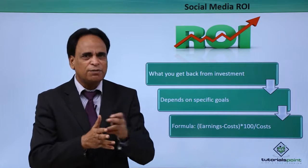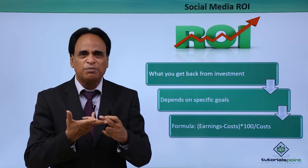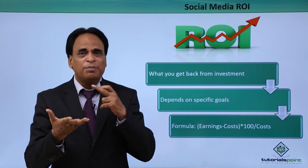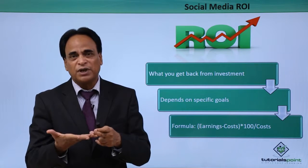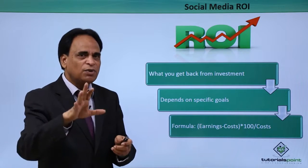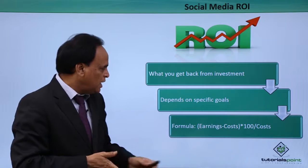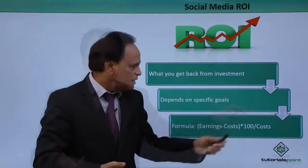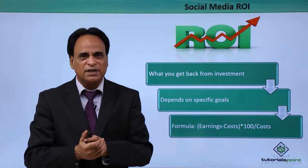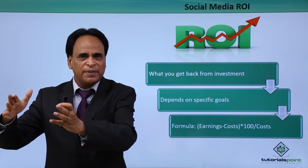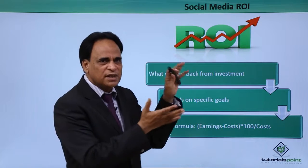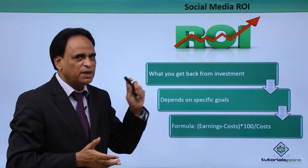These goals can be driving traffic — that is number one. The second is selling products, whether people are buying or not. You have a goal such as people registering on your site by filling up a form, or you want people to download certain products in terms of PDF files. What are your goals that you want to achieve depends upon the return that you want to get. The formula is very simple: earnings minus cost, multiplied by 100, divided by the cost. That is basically what the social media ROI formula is — you are spending a certain amount of money and measuring what you are getting in terms of achieving your goals and objectives.